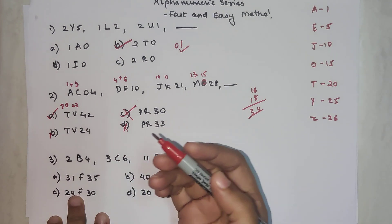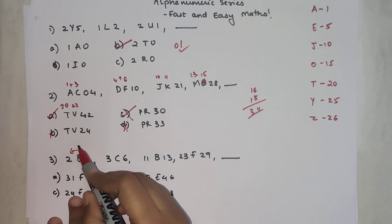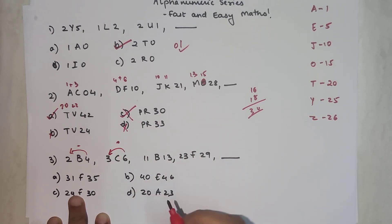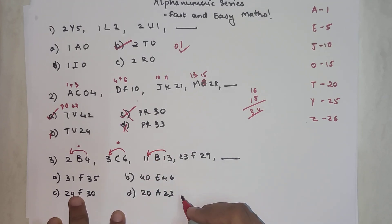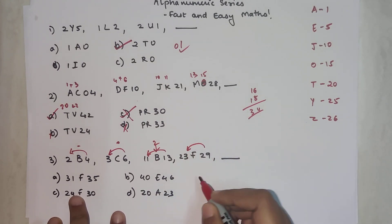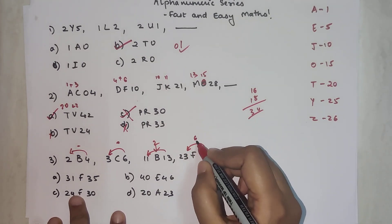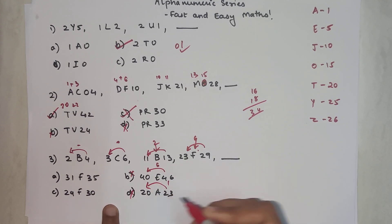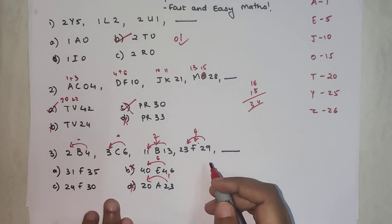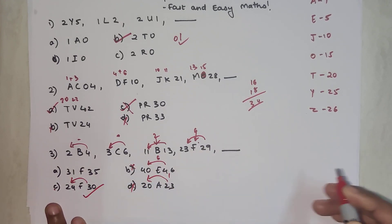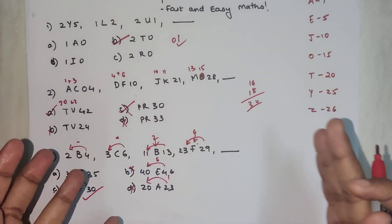Now here we have B which is standing on number two. Four minus two gets you two, which is B. Six minus three gets you three, which is C. Thirteen minus eleven gets you two, which is again representing B. Twenty-nine minus twenty-three gets you six, which is representing F. Six is not possible because six is represented by F. This is getting you one, which is not possible. This is getting you six, and that is your answer.